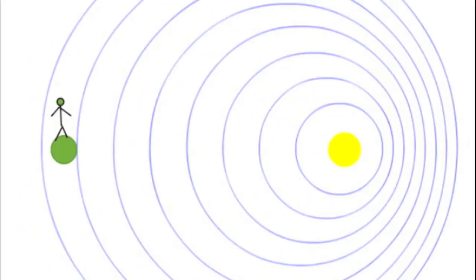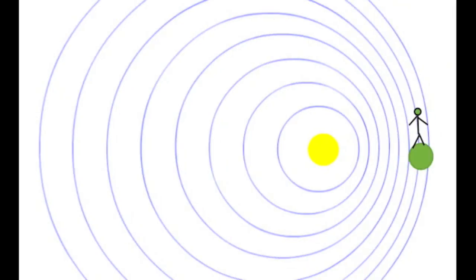An observer on Earth looking at a star which is moving away will see the waves stretched out. You'll notice, by the way, that the Earth and the observer aren't exactly to scale. If the relative movement of the star is towards the observer, then the waves seem bunched together.